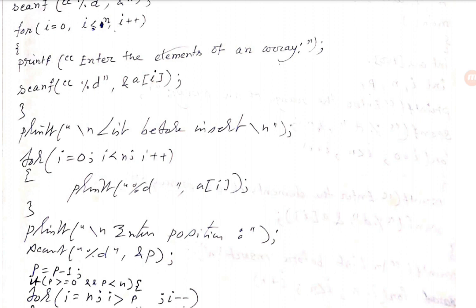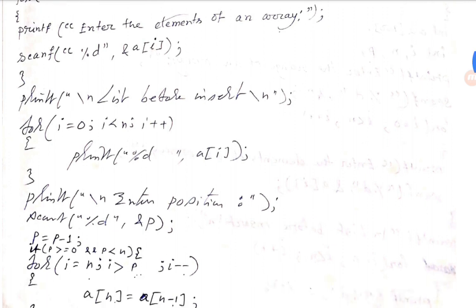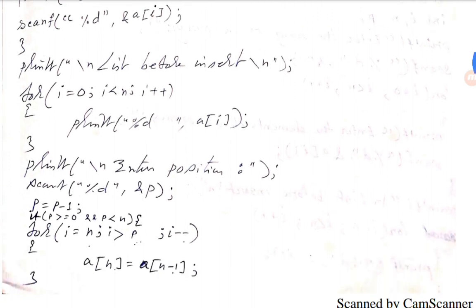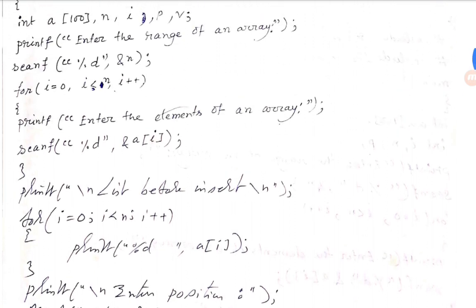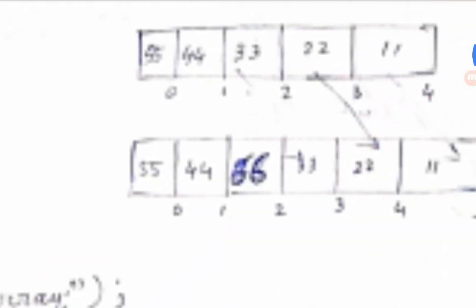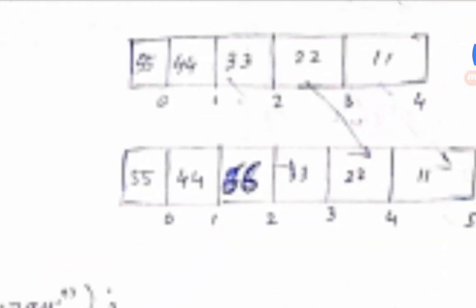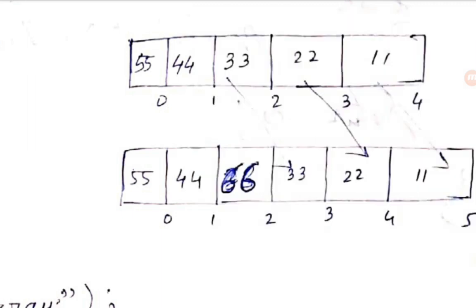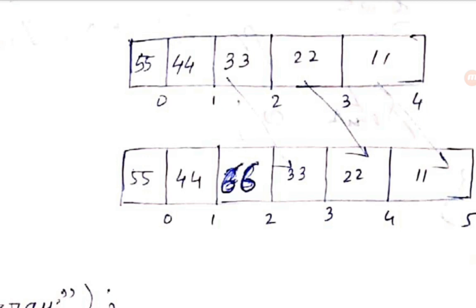We need to insert an element into the array. We print the list before insert. The array indices are 0, 1, 2. We insert into position 2 — the value 6 is inserted at that position.